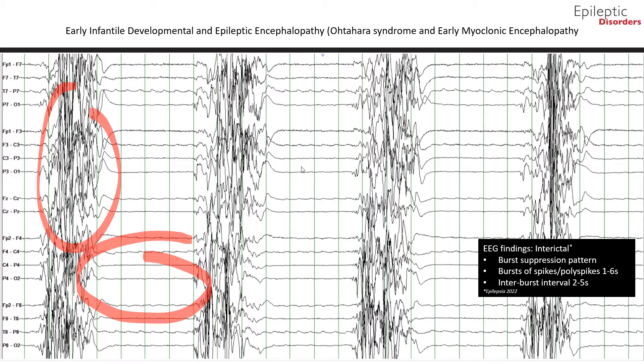For infants who evolve to IESS or infantile epileptic spasm syndrome, hypsarrhythmia may appear with age. If the etiology is treatable, i.e., the underlying metabolic or structural lesions, the EEG may improve or even normalize.